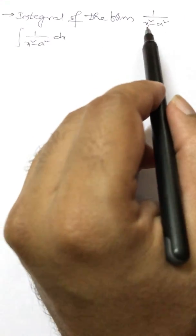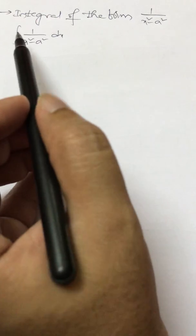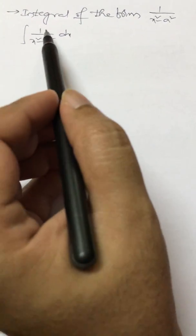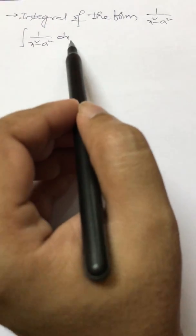Integral of the form 1 by x square minus a square. So that is integral of 1 by x square minus a square dx.